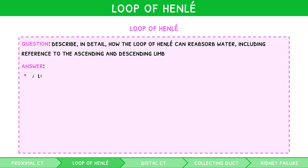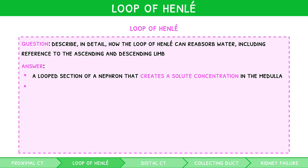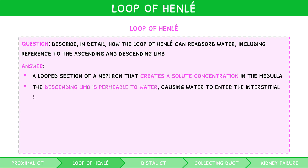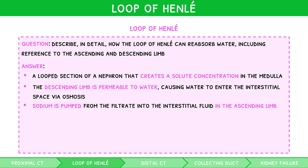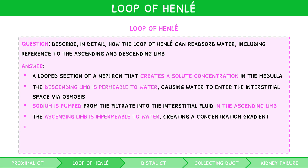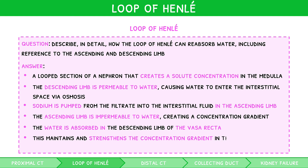The loop of Henle is a loop section of a nephron which creates a solute concentration in the medulla. As the descending limb is permeable to water, this causes water to enter the interstitial space by osmosis. The nephron pumps sodium ions from the filtrate into the interstitial fluid in the ascending limb. As the ascending limb is impermeable to water, this creates a concentration gradient. This water is absorbed in the descending limb via the vasa recta. Doing so maintains and strengthens the concentration gradient in the medulla, known as the countercurrent multiplication system.